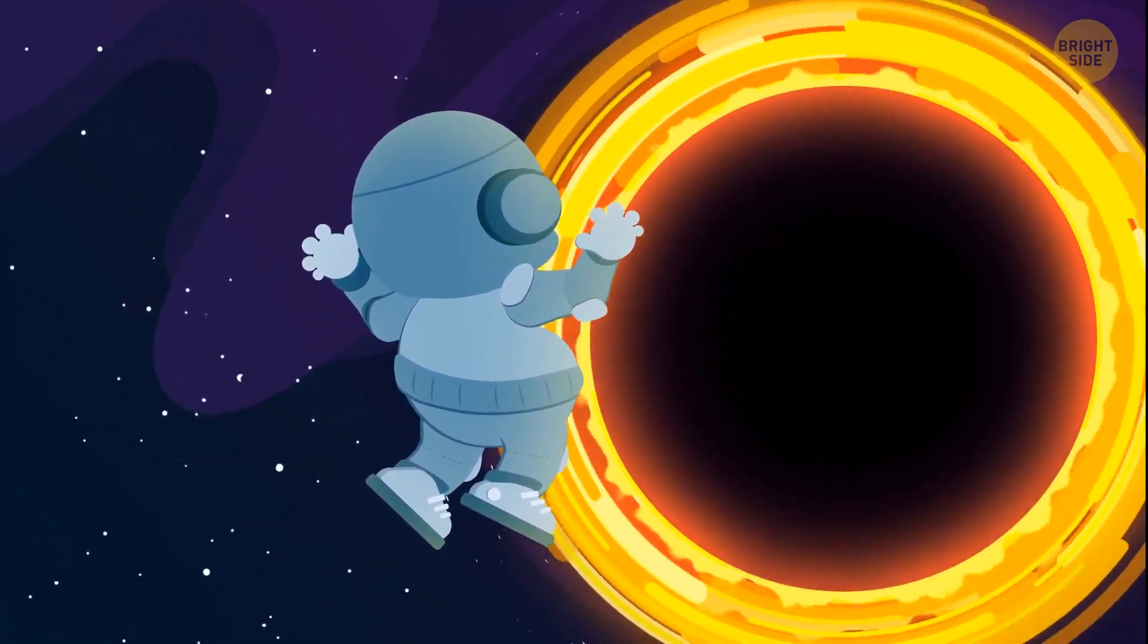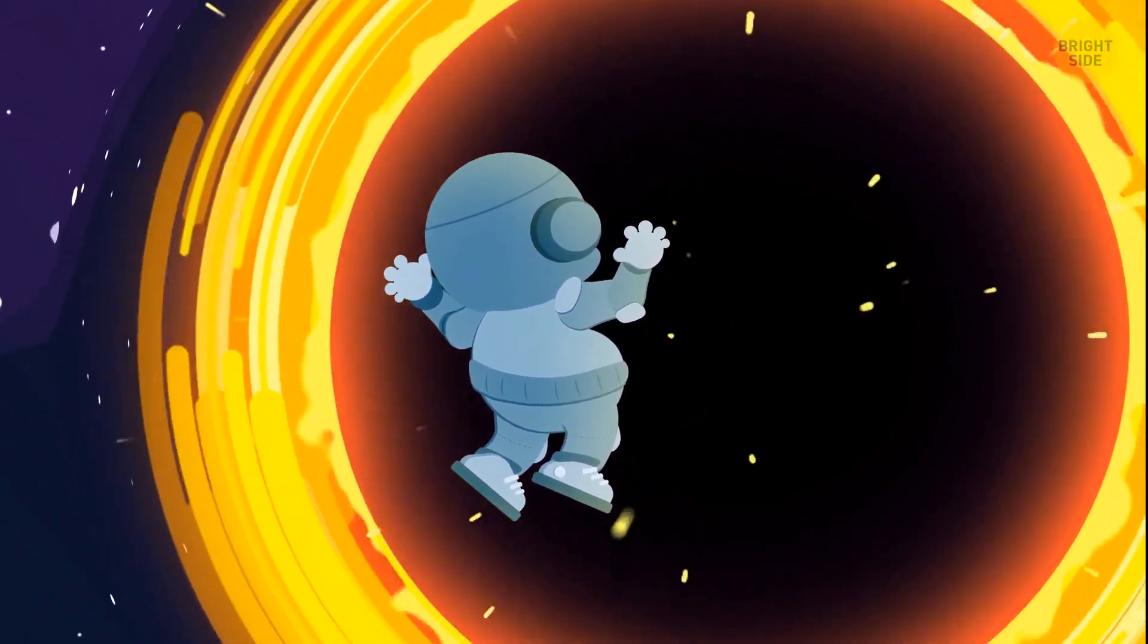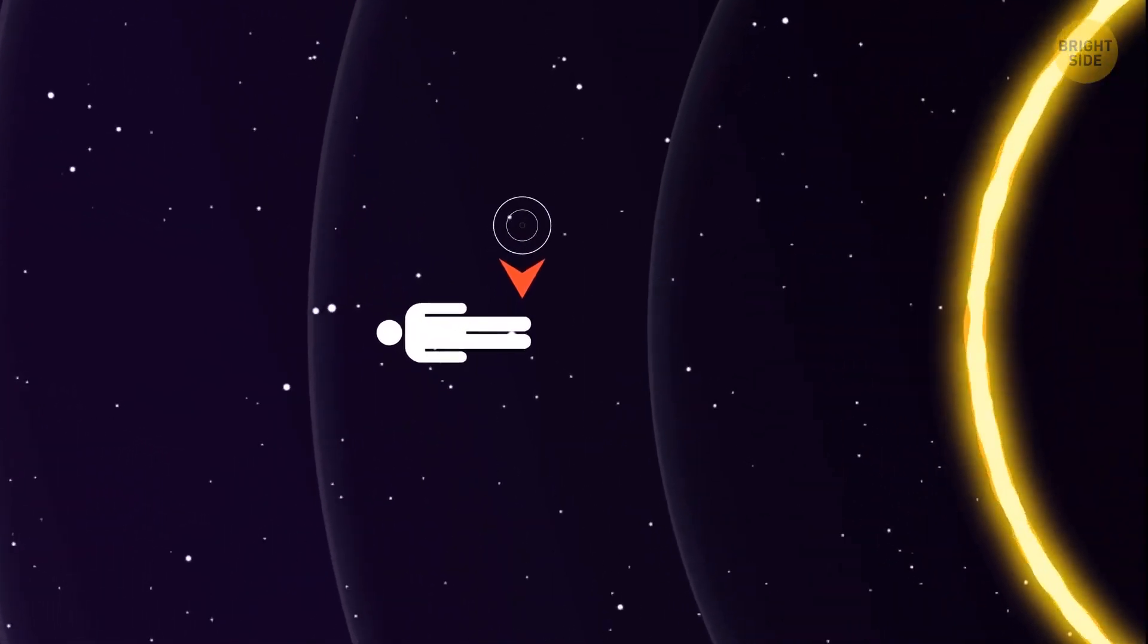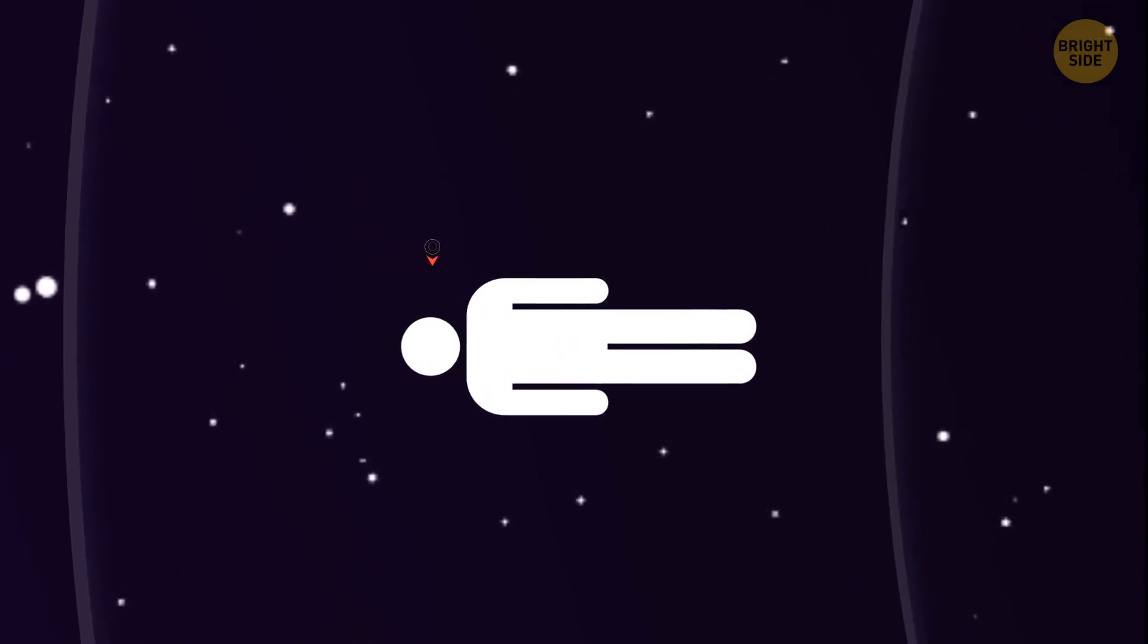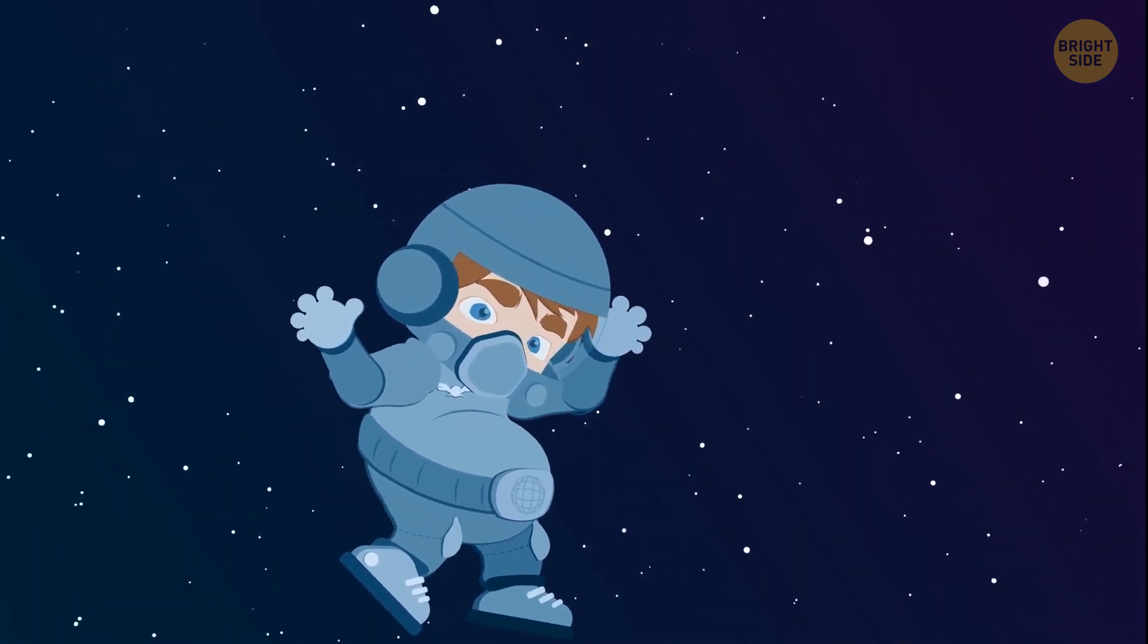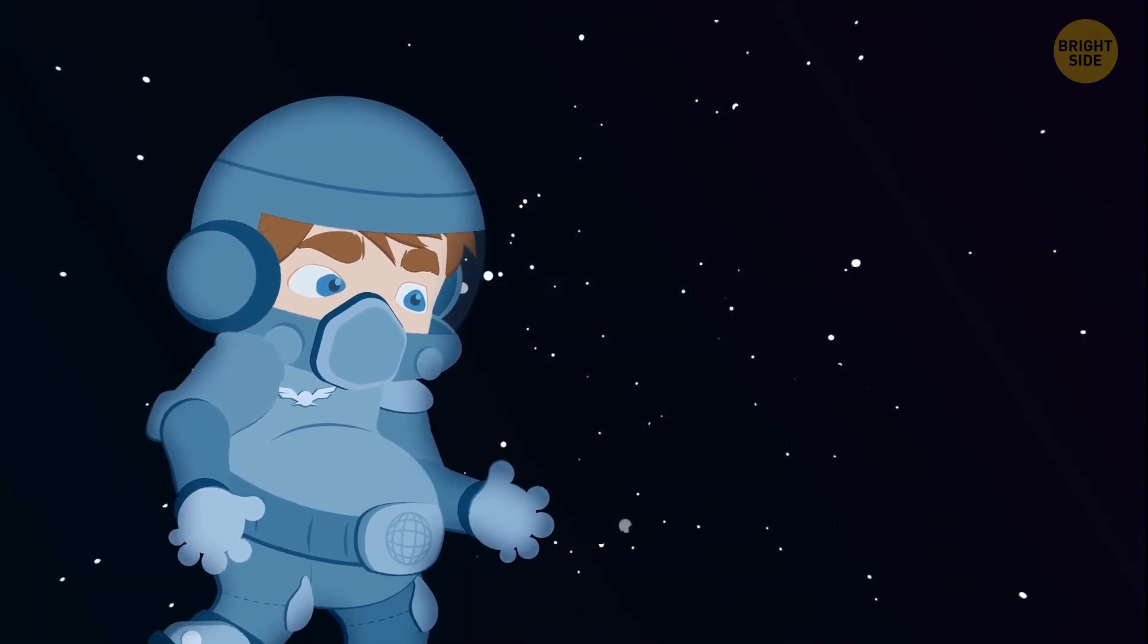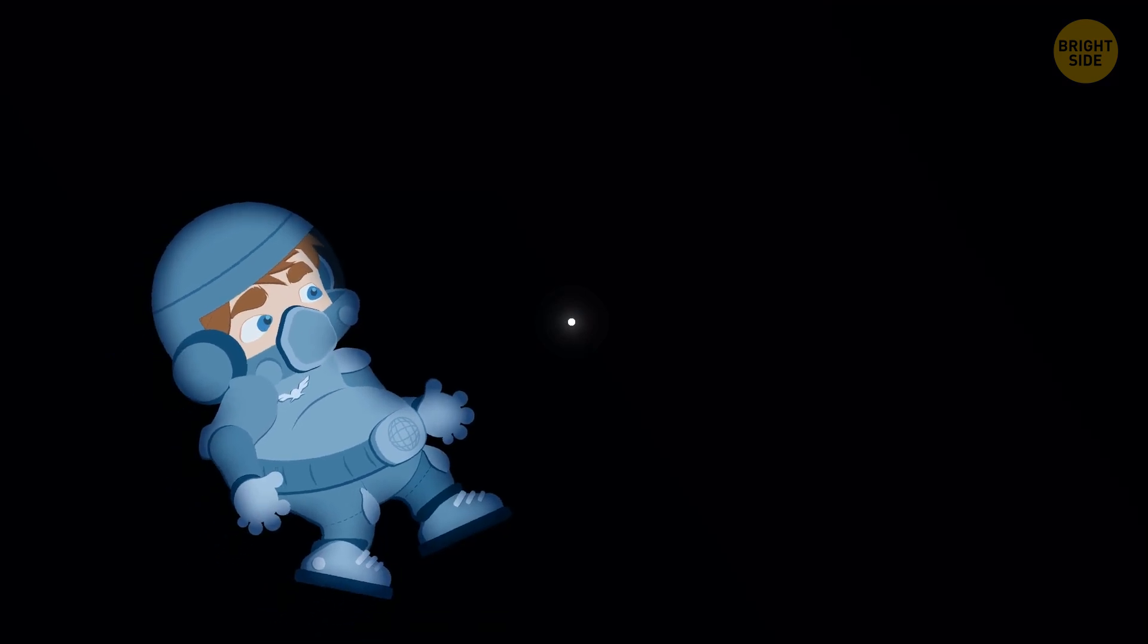At first you feel a strong acceleration as the incredible force of gravity grabs you. But in the case of a supermassive black hole like this, the gravity doesn't change as dramatically. That's because of its size. Right now the gravitational force on your legs is about equal to the gravitational force on your head. So you don't turn into spaghetti and you feel comfortable. You see that the light from the stars and all the space around you has begun to shrink at a certain point. It means that you have already passed the event horizon and are now moving toward the black hole's heart. As a result, the light of the universe becomes a small dot for you and then disappears altogether.